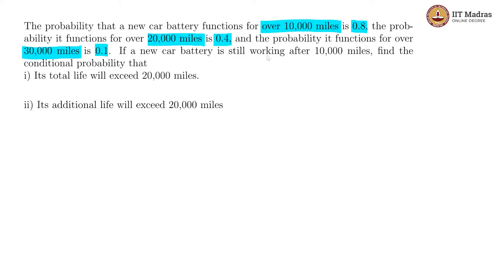If a new car battery is still working after 10,000 miles, find the conditional probability that its total life will exceed 20,000 miles and its additional life will exceed 20,000 miles.